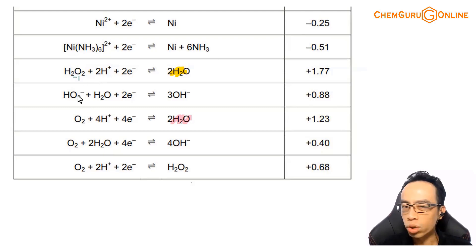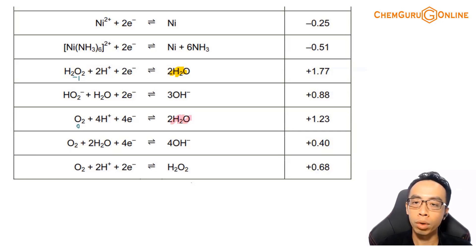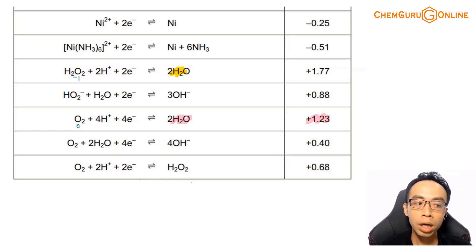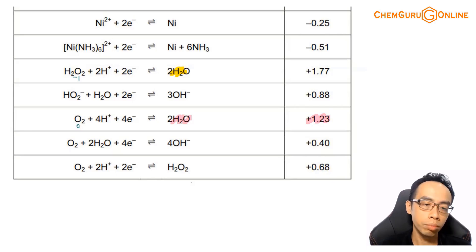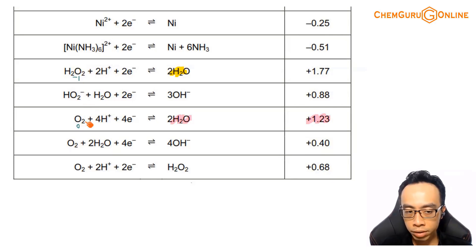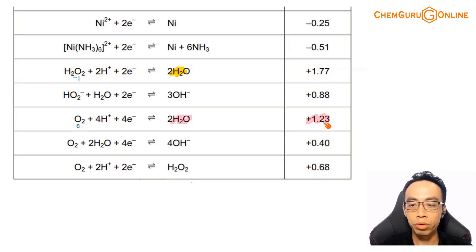Peroxide has an oxidation state of minus 1 — not good. O₂ has an oxidation state of 0 — this is better. The oxidation state for oxygen is usually 0 or minus 2. The more common the oxidation state, the more stable it is. Between 0 and minus 1, we choose 0. So we reject the 1.77V option and choose the 1.23V half equation for oxidation of water.